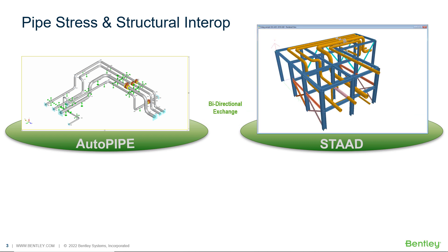The STAAD model will be updated to include the piping and the piping supports. Then the structural engineer will have the task of connecting the structure to the piping through the pipe supports and transferring the piping loads to the structural loading, rerunning the analysis now including the piping loads, and making any changes as necessary — maybe adding bracing or increasing structural sizes to again pass the structural criteria.